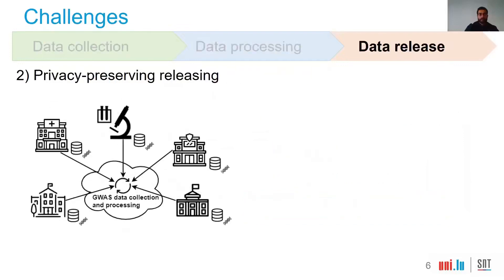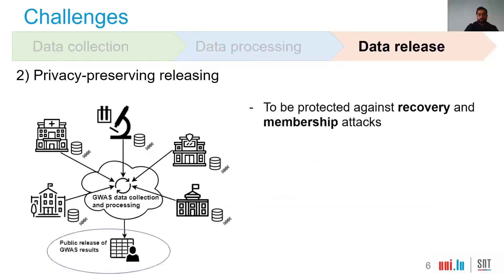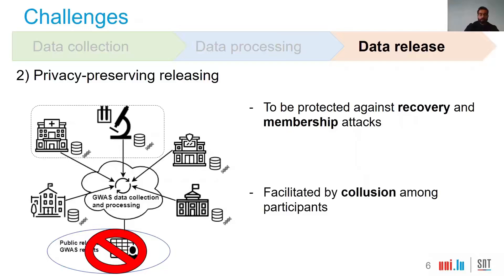The second challenge is the data release of GWAS, which must be done in a privacy-preserving manner. It has been shown in the literature that the simple release of GWAS results is vulnerable to recovery and membership attacks. Since 2018, GWAS results are no longer made public. In addition, these attacks can be facilitated by collusion among participants.